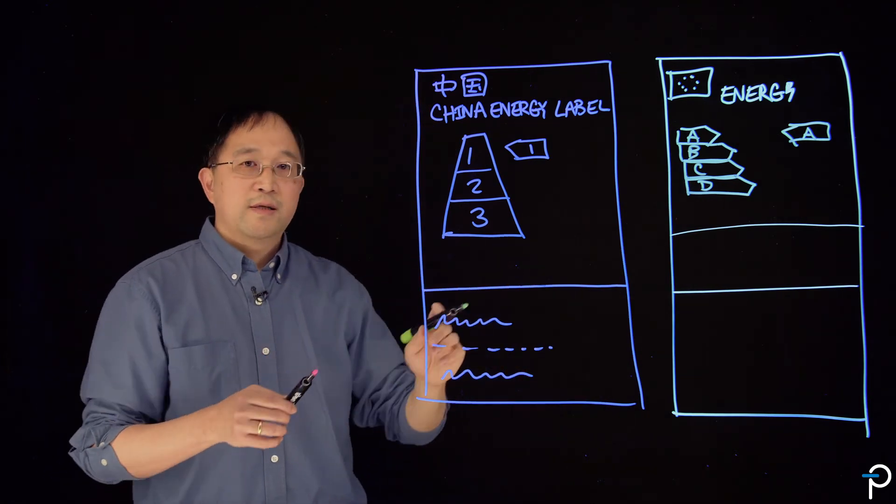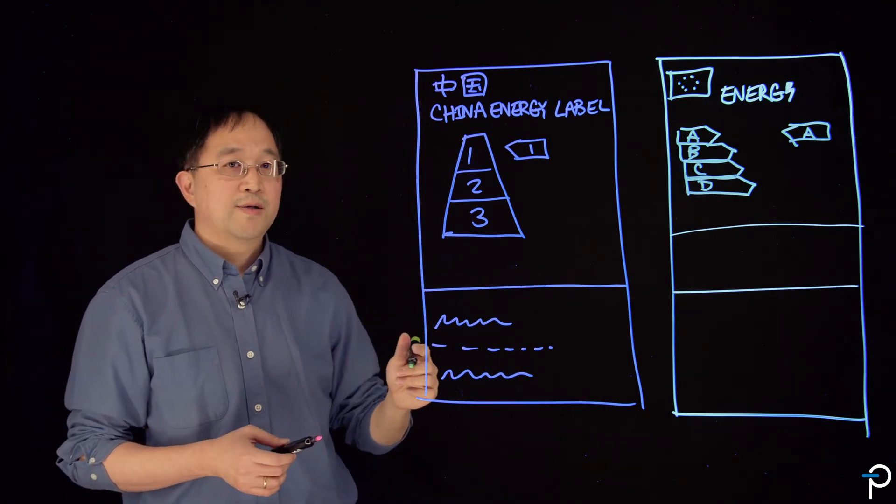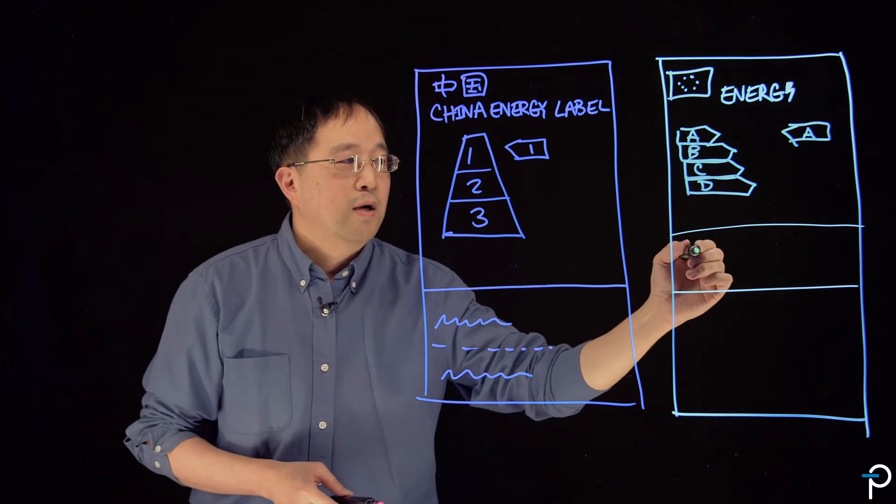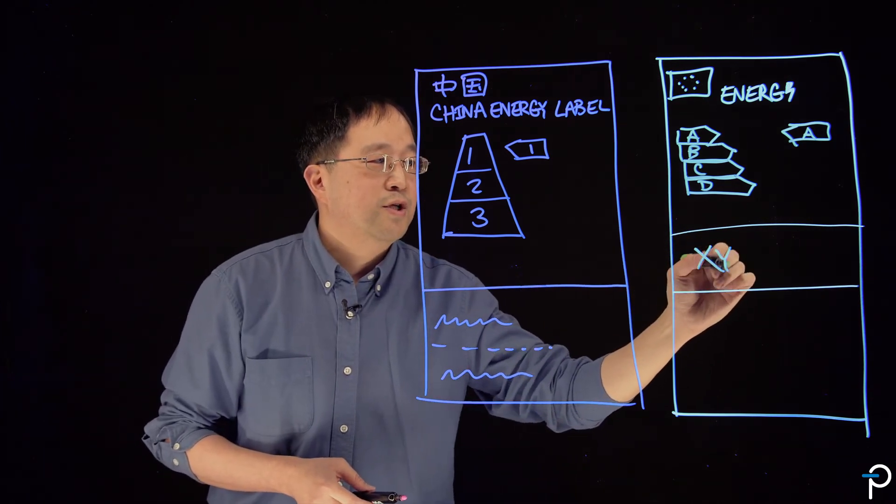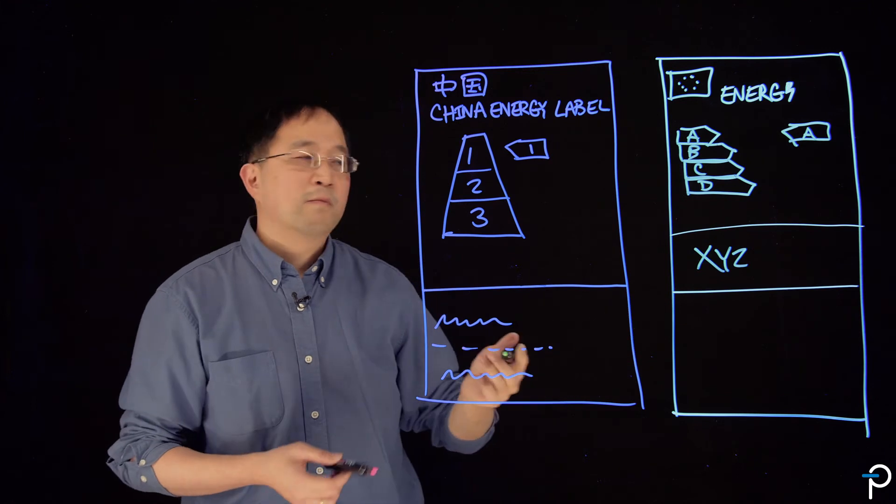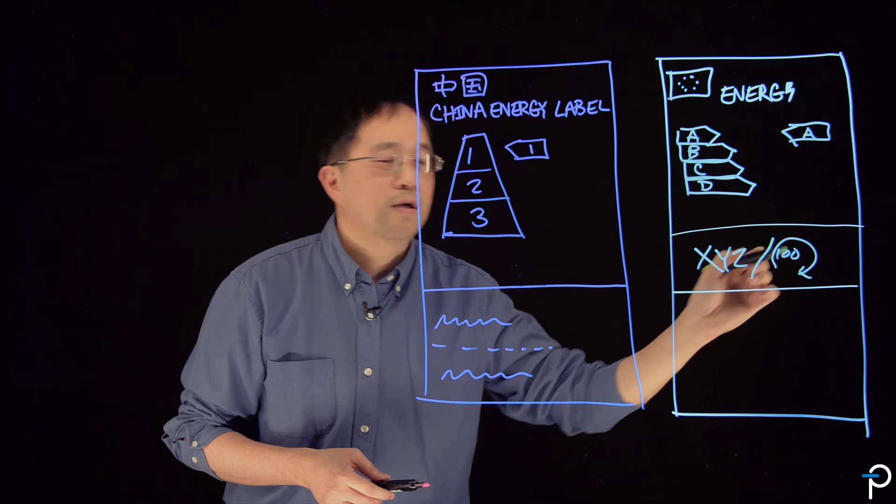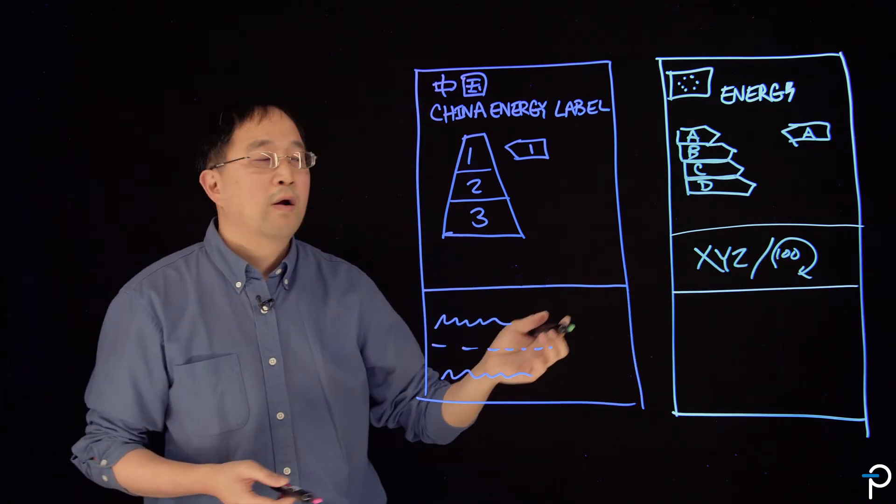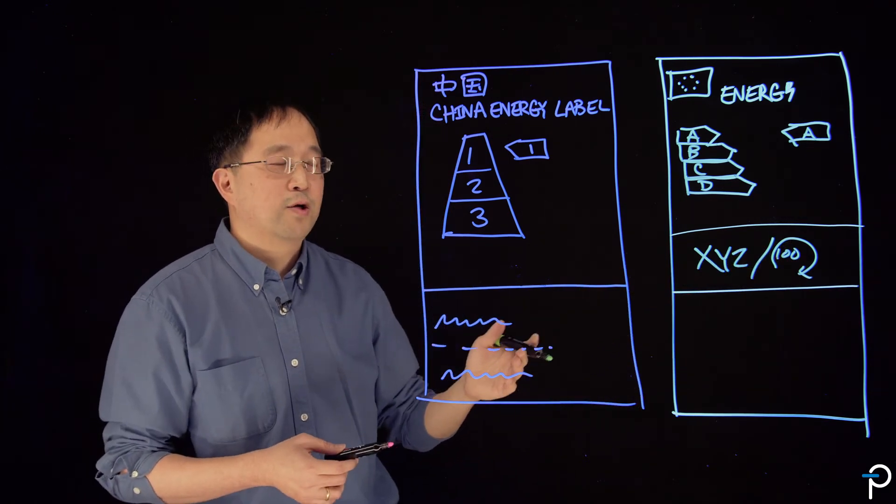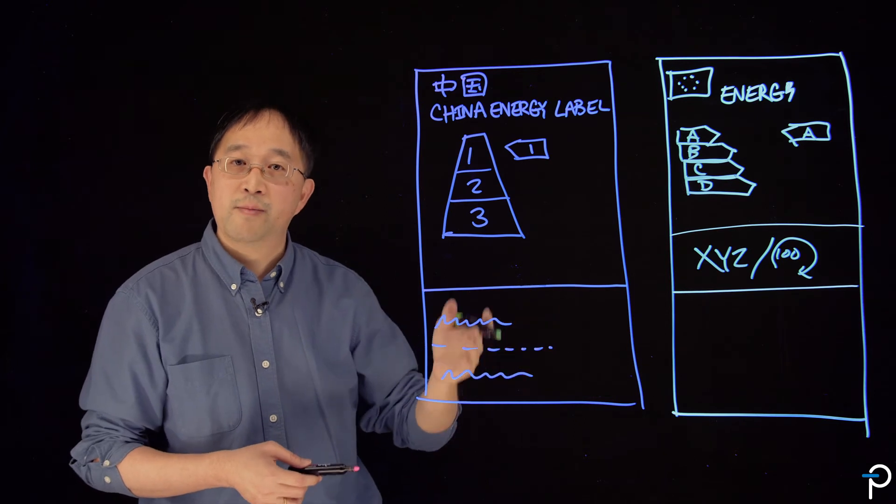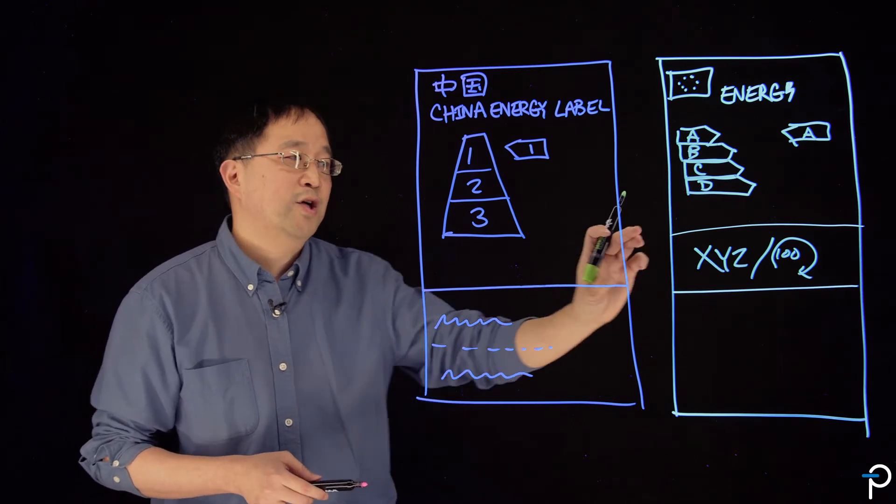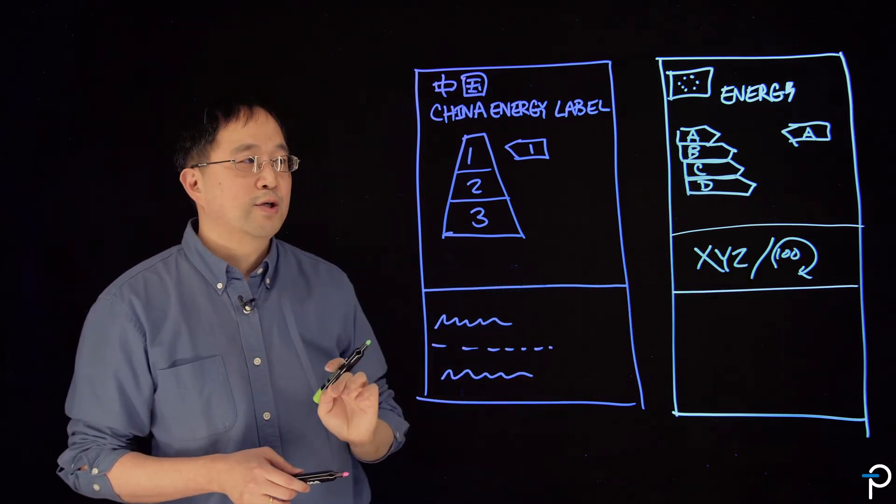Beyond what is listed there, the European label also shows the usage in energy over, for example, a full cycle if it's a dishwasher, or it could also reflect the total energy usage in a year, so it could be per annum. And that's generally listed in the middle section of the label.